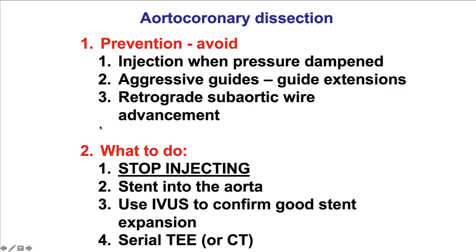What to do if an aortocoronary dissection occurs? The first and most important step is to stop injecting. Injection of contrast can actually enlarge the aortocoronary dissection and make it worse. So stopping injection is the most important step. It sounds obvious, but sometimes due to the stress and nervousness of having a complication and trying to understand better what's happening, many operators might continue injecting with catastrophic consequences.